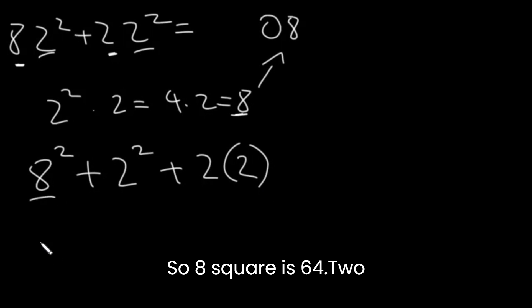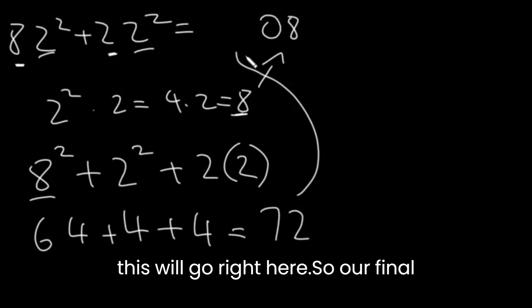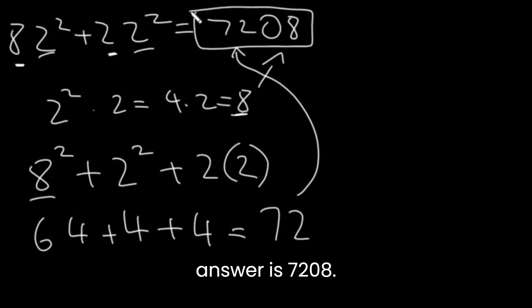So 8 squared is 64, 2 squared is 4, and 2 times 2 is 4. So this is 72. So this will go right here. So our final answer is 7208.